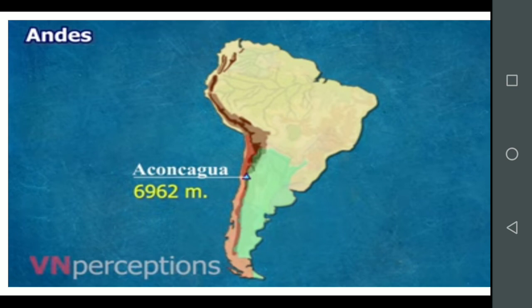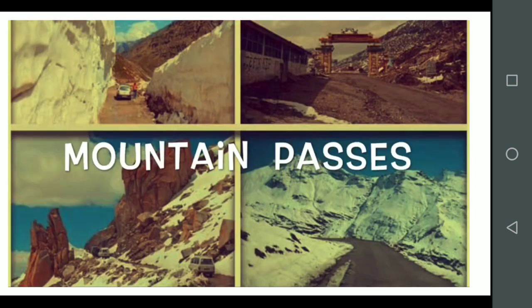Some high peaks remain snow covered despite being near the equator. Because of the great height, these mountains are very difficult to cross. Hence, people use mountain passes here.